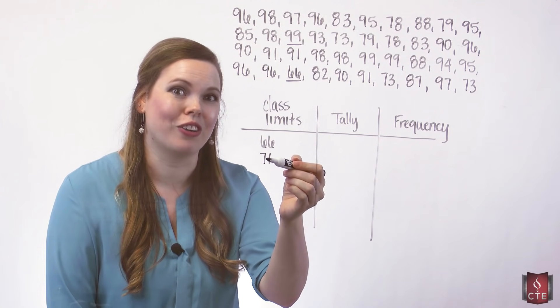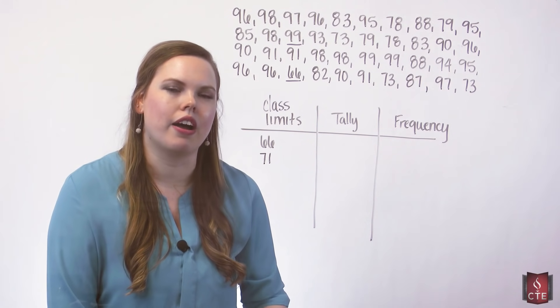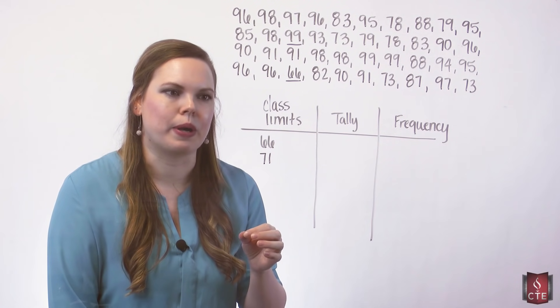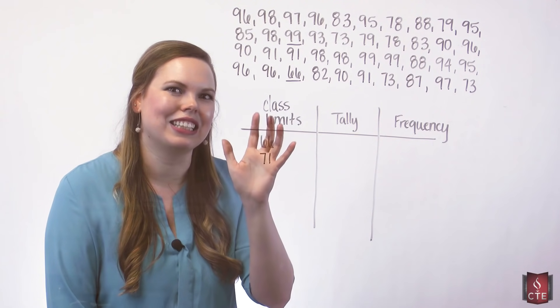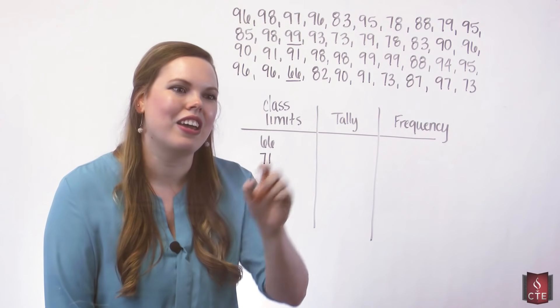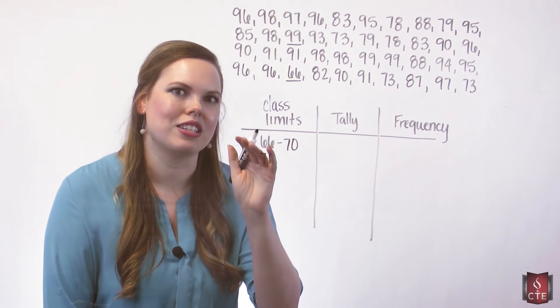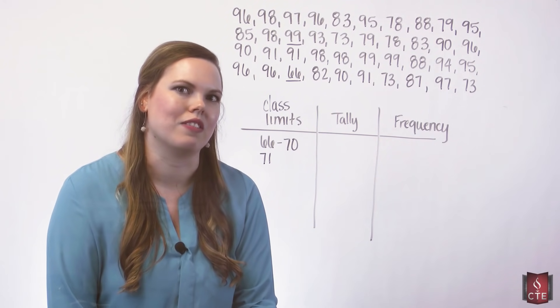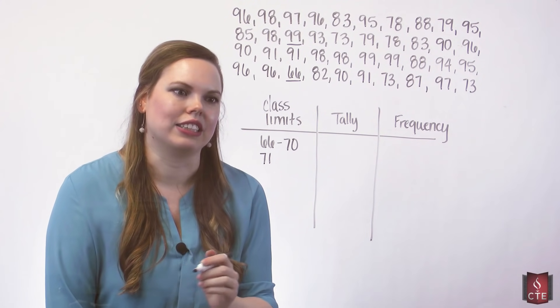The reason why it's this way, vertical and not horizontal, is because our class width is the number of data values that are in that class. The number of numbers that would land right there. So 66, 67, 68, 69, and 70, that makes 5. That's why this goes up to 70. All those values, 66, 67, 68, 69, and 70, is going to land right here. And that's what our class width is representative of. That's why we're adding 5 vertically as we come up with our class limit.